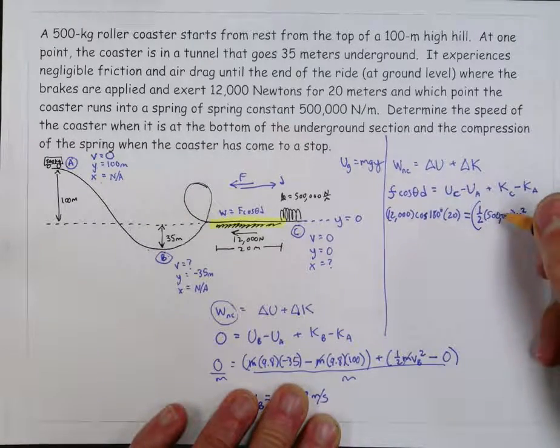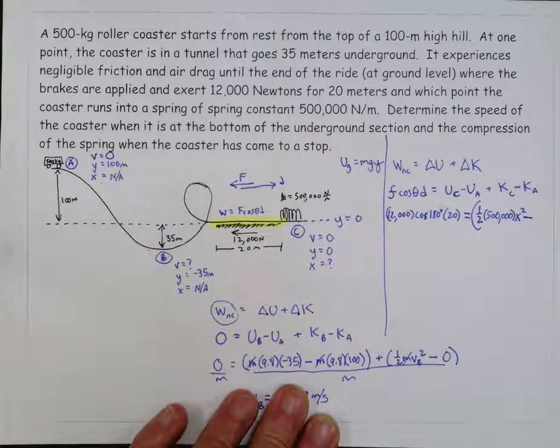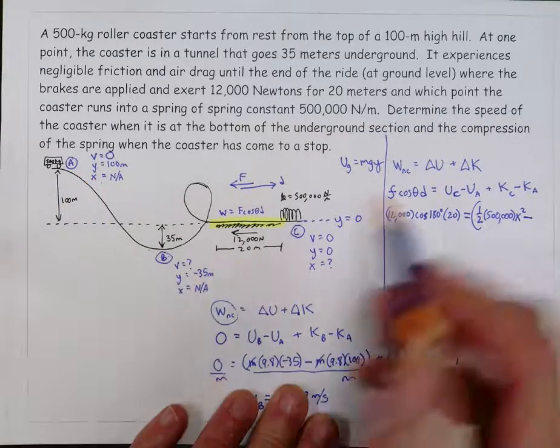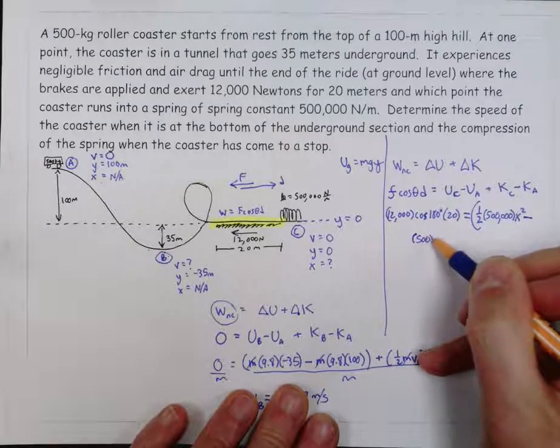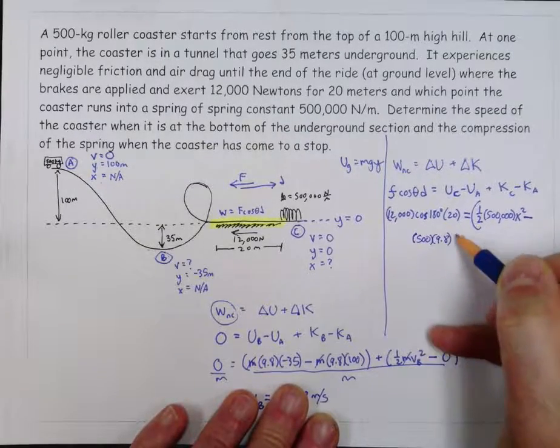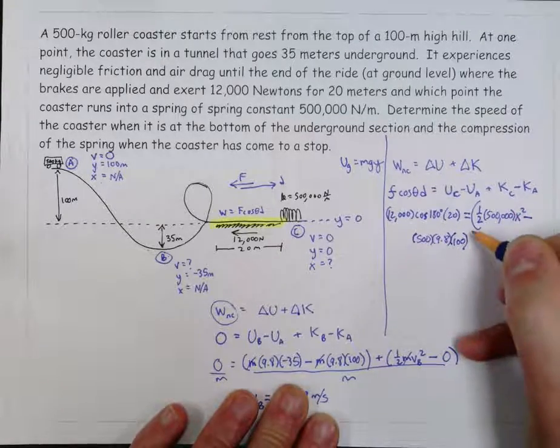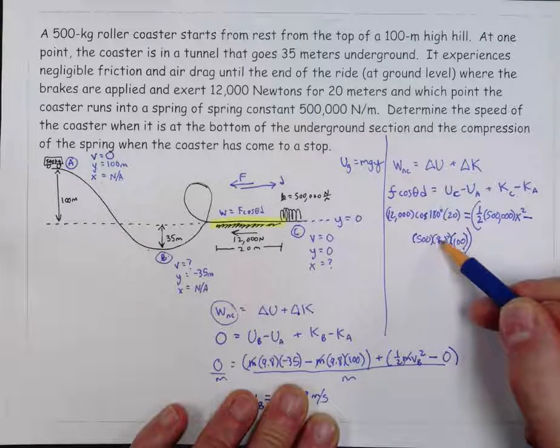Minus, so that's the potential energy at c, minus the potential energy at a. And so that is gravitational potential energy, like we did last time. So that's going to be the mass, which is 500 times 9.8 times 100. So that's the potential energy at c, minus the potential energy at a.